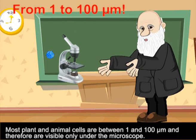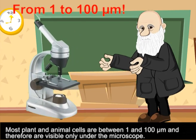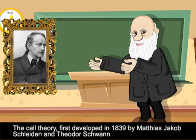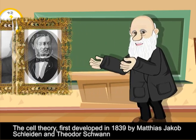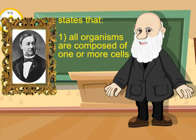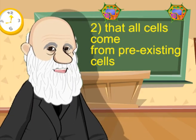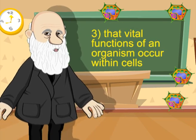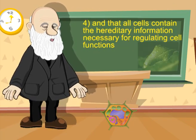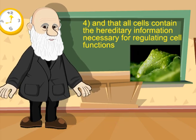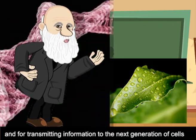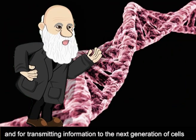The cell theory, first developed in 1839 by Matthias Jacob Schleiden and Theodore Schwann, states that all organisms are composed of one or more cells; that all cells come from pre-existing cells; that vital functions of an organism occur within cells; and that all cells contain the hereditary information necessary for regulating cell functions and for transmitting information to the next generation of cells.